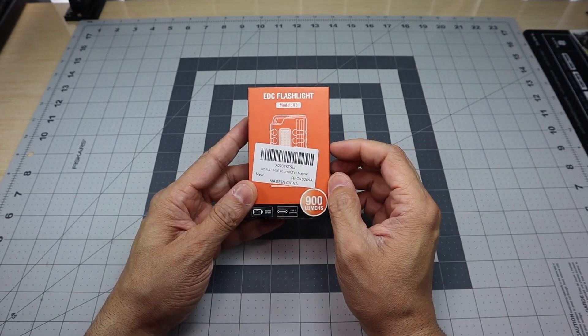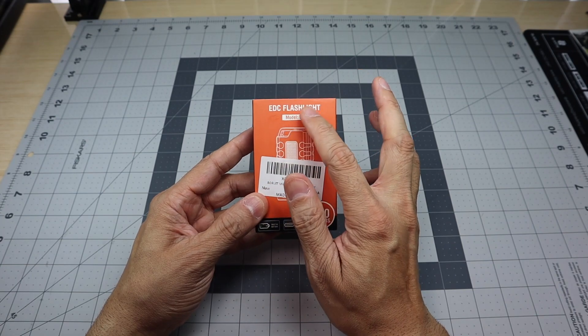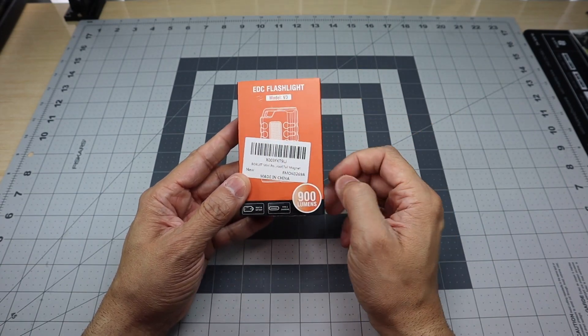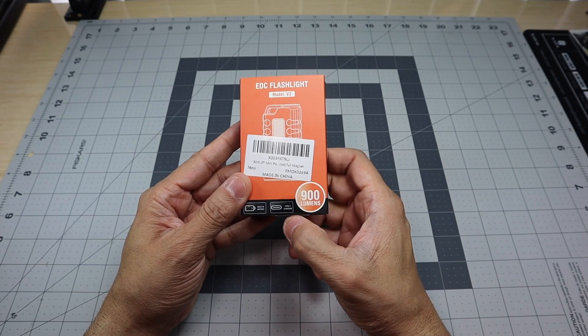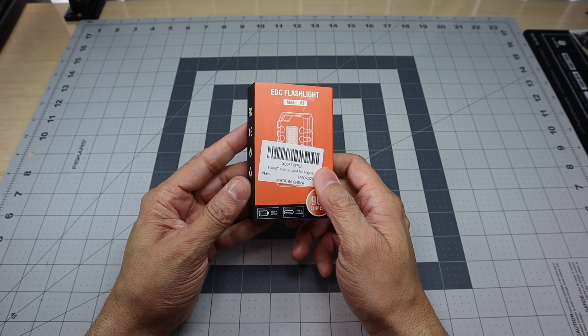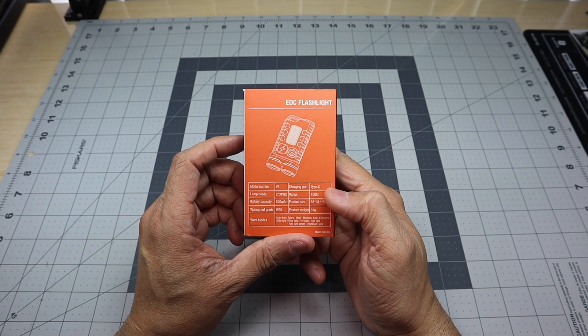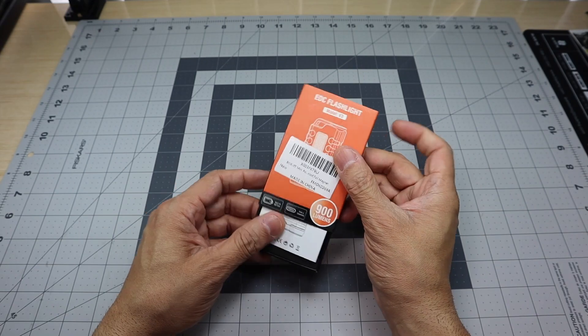So this is the packaging here, it says EDC flashlight model V3. It's got a picture of the flashlight behind this thing here. 900 lumens type C charging and built-in battery and then just talks a little bit about the different features on the back which we'll go ahead and take a look at.